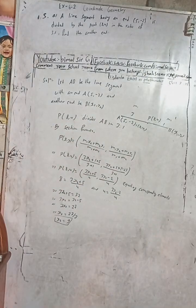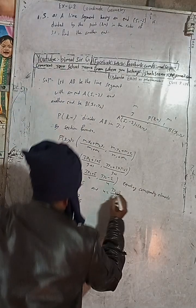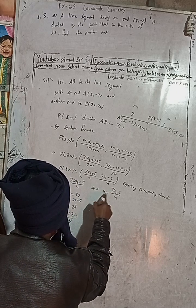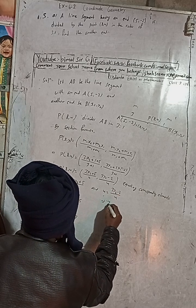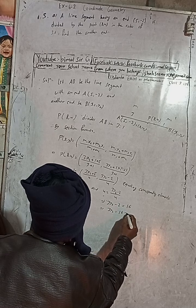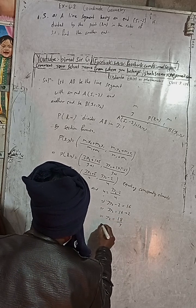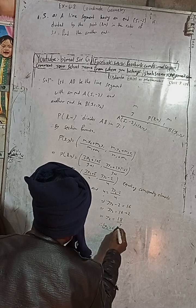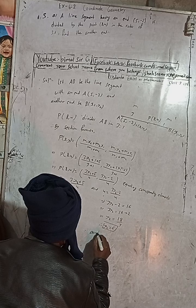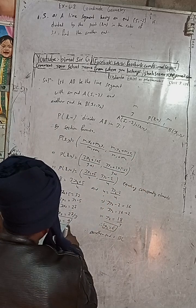Now solving the y-coordinate part: 4 = (3·y2 - 2) / 4, so 3·y2 - 2 = 16. Therefore 3·y2 = 16 + 2 = 18, and y2 = 18 / 3 = 6. Therefore the other end is B(x2, y2) = (9, 6).